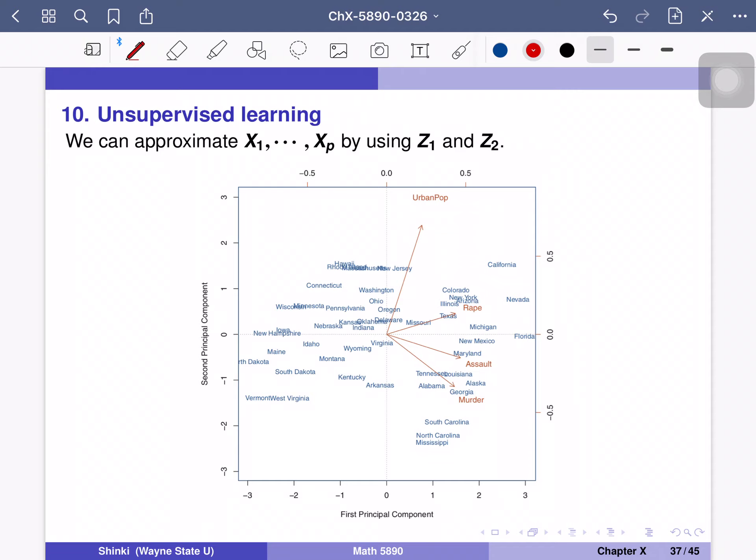This is another use of principal component analysis. Since z1 and z2 include most information of x1 to xp, we can approximate x1 to xp, each of x1 to xp by these first few principal components.